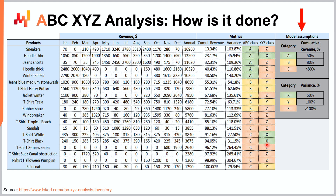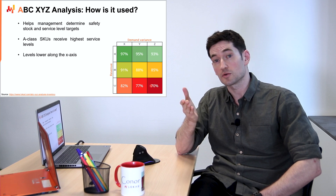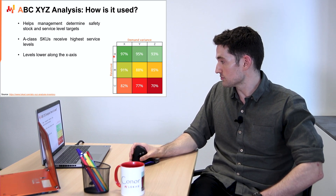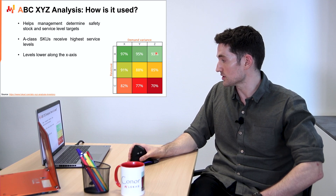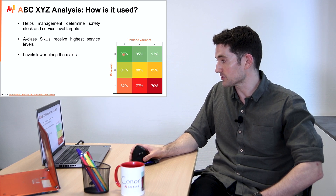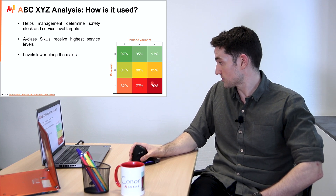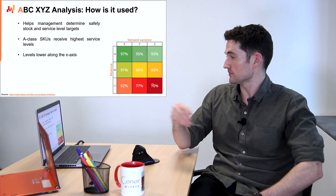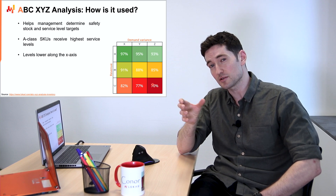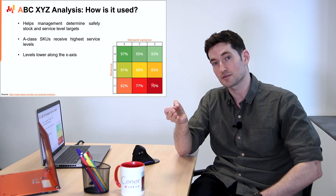X-class means low variance, Y-class moderate, and Z-class high. A typical ABC XYZ matrix can help management set appropriate service level and safety stock targets. For example, one's A-grade SKUs would receive the highest level of service, with levels depreciating as one moves along the X axis. A-X SKUs, which generate high revenue and low variance, would receive higher levels of service than C-Z SKUs, which generate low revenue and incredibly high variance. A supply chain practitioner can tweak service levels to reflect each category, with nine policies instead of only three.